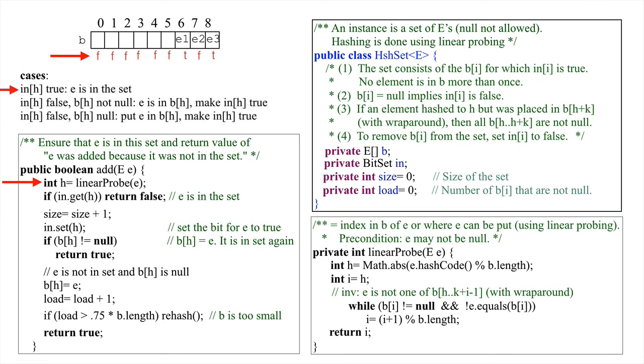in[h] is true, by the class invariant e is already in the set. Second, in[h] is false and b[h] is not null. Then, b[h] equals e and e can be added to the set by setting in[h] to true. Finally, in[h] is false and b[h] is null. Then, e is to be placed in b[h] and in[h] has to be set to true.